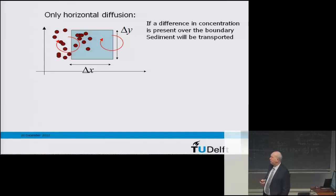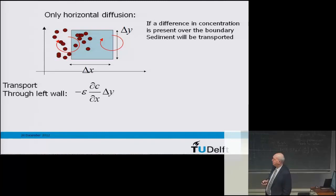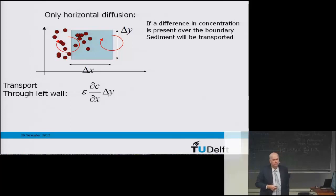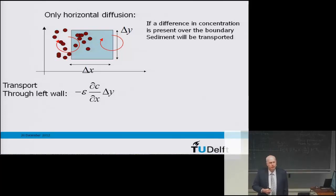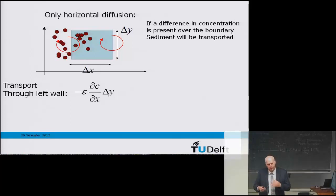How do we write this in terms of an equation? The transport through the left wall is equivalent to the concentration gradient — that is dc/dx — multiplied by epsilon, a diffusion constant that accounts for how effective that eddy is. If there's very small turbulence, epsilon is low — almost no mixing. If it's a very turbulent field, epsilon is large — a lot of mixing. It's a mixing coefficient that takes into account the effect of turbulence.